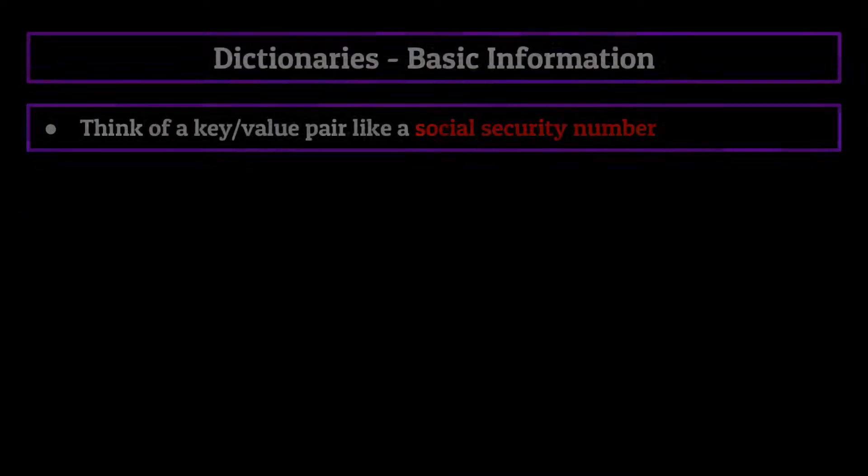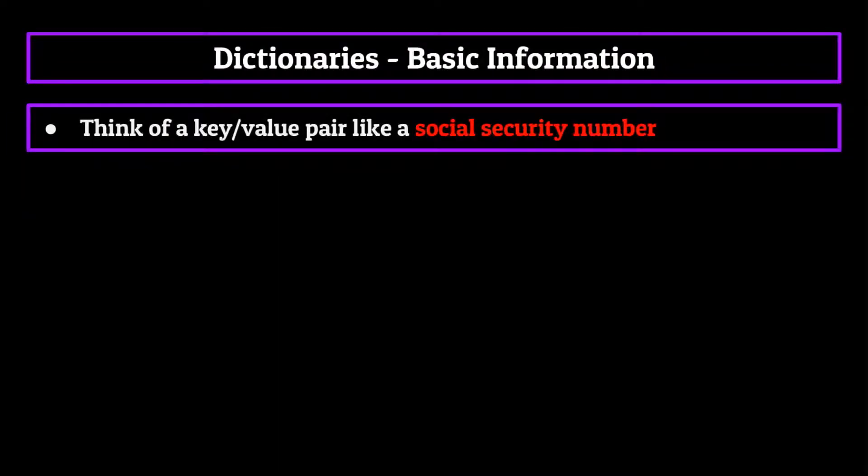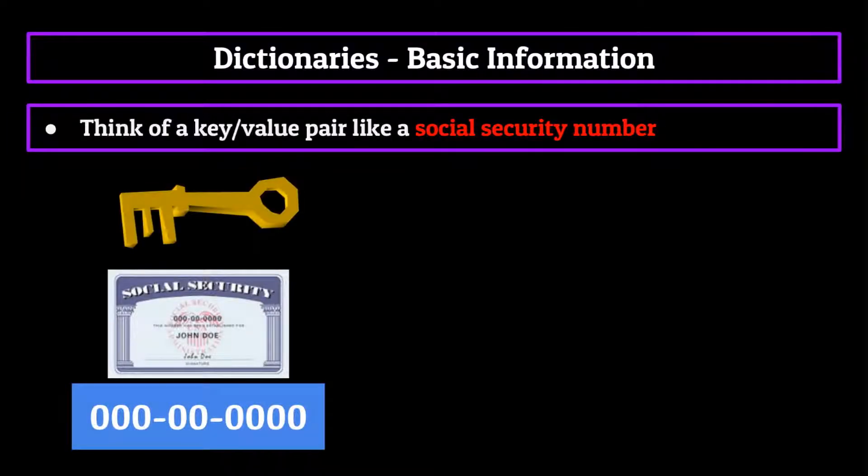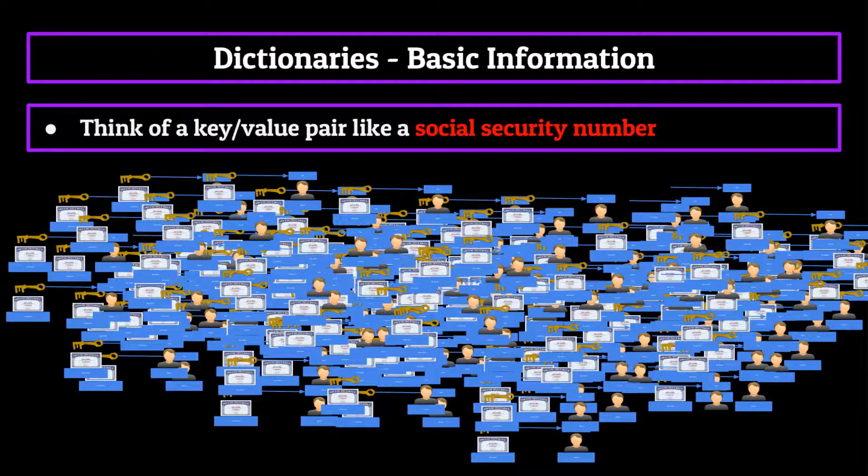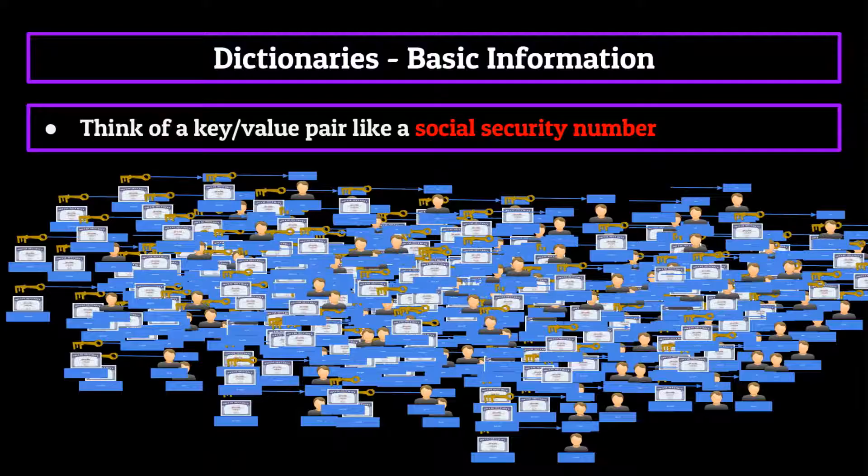Think of a key value pair like a social security number. Each social security number is a key, which is then paired with a value, that value being an individual person. The social security number key value pairs then come together to form a dictionary of every human contained within the United States.